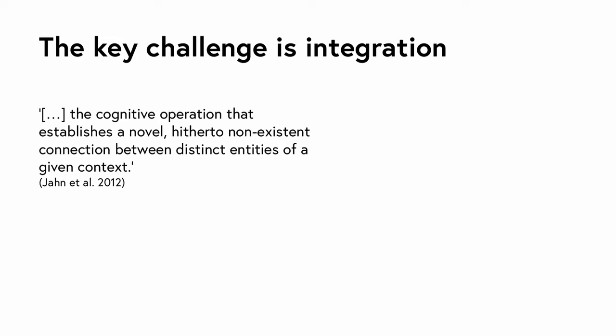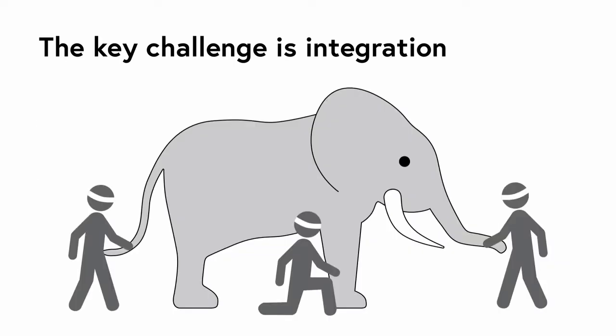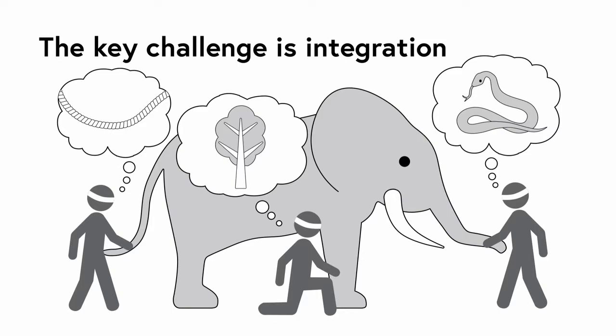A key challenge of jointly conducting research, but also of the other two phases, is integration. According to Jan et al., integration in an abstract sense means to connect things that were not connected before. According to Urug et al., integration is a process during which a series of changes to the inputs results in a bringing together or combination of inputs producing an output. Such integration is mostly based on partial knowledge about the subject; therefore, different abstractions of the original subject exist.